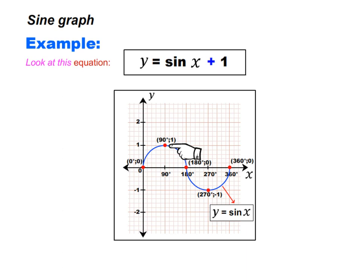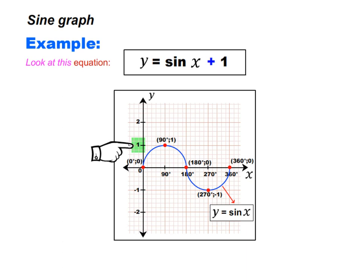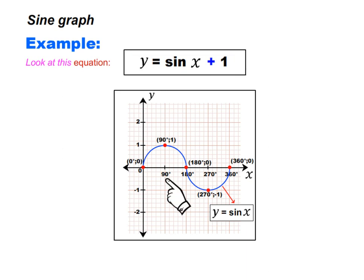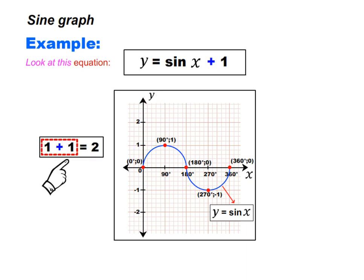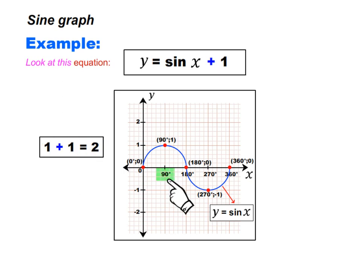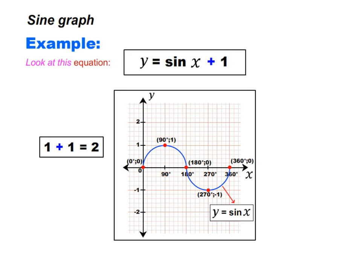Remember that 90 degrees is the x coordinate and 1 is the y coordinate. For the graph of y is equal to sin x plus 1, the 90 degrees stays the same, but the y coordinate, which is 1, will be added with 1. One plus 1 is equal to 2. So 90 degrees and 2 is the turning point of the graph of y is equal to sin x plus 1. Let us put a dot where 90 degrees and 2 meet — they meet here.